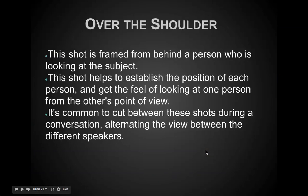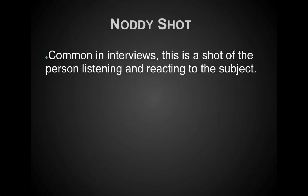The over-the-shoulder shot is framed from behind a person who is looking at the subject. It helps establish the position of each person and gives the feel of looking at one person from the other's point of view. It's common to cut between these shots during a conversation, alternating between the views. Next week we'll dive into frame composition — left third, right third, center third, and the golden ratio. A nodding shot is when it cuts back to somebody nodding, and you'll also see this in interviews with crowd reaction shots.